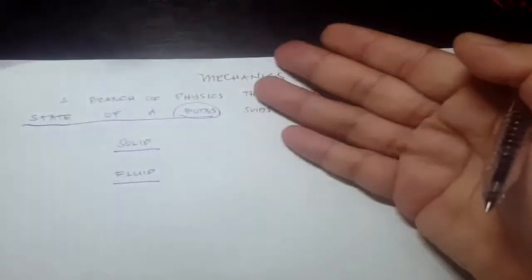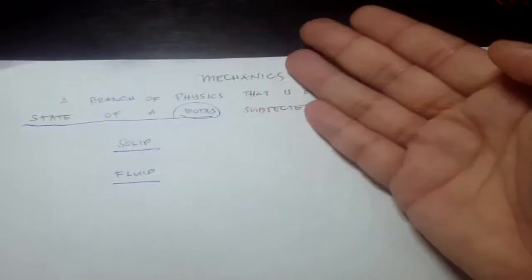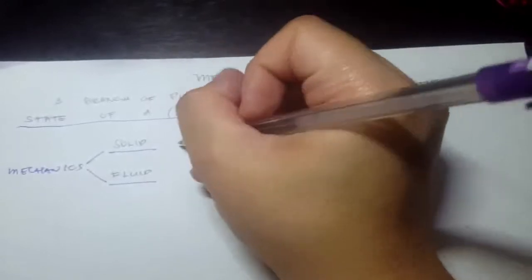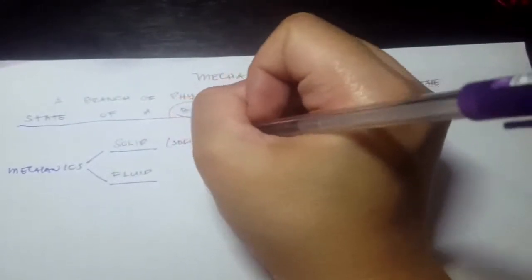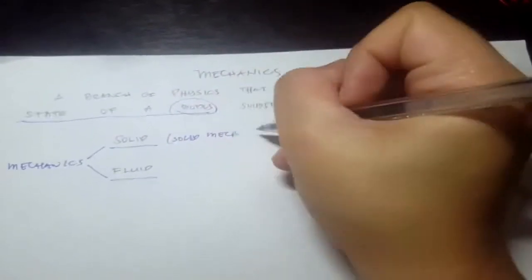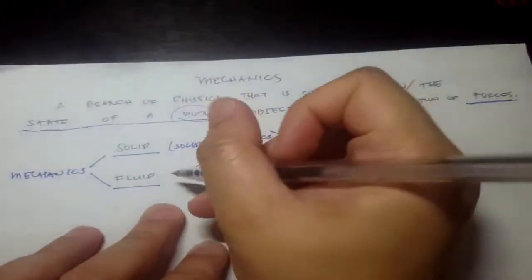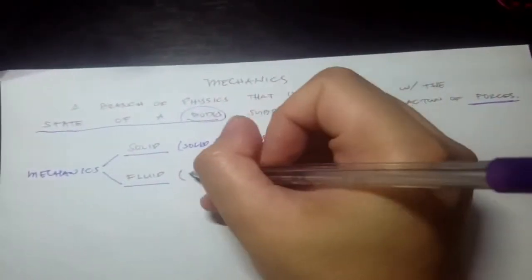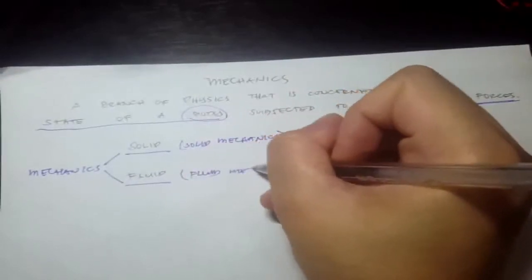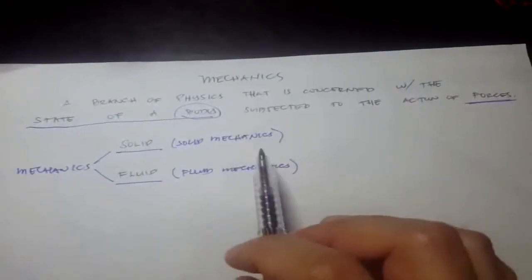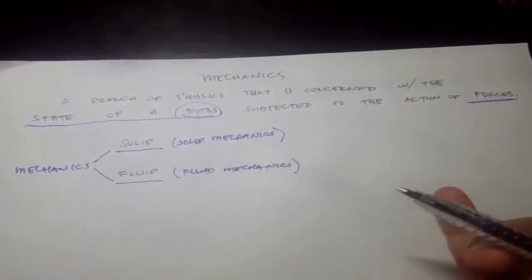That's why mechanics is divided into two main categories: solid mechanics and fluid mechanics. Solid mechanics deals with the mechanics on solid bodies, and fluid mechanics deals with the mechanics, or the action of forces, in fluid bodies.